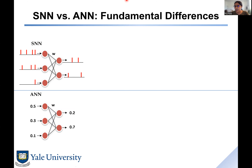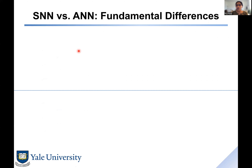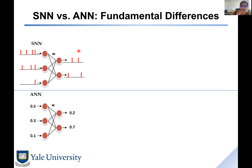Before moving on to spiking algorithms, I want to talk about the major differences between a standard artificial neural network and a spiking neural network. In terms of network architecture configuration — fully connected, VGG-like convolutional, or ResNet-like — that can remain the same. The key difference is that in an ANN inputs and outputs are real-valued, whereas in an SNN the inputs and outputs are spikes.